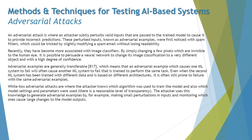These perturbed inputs, known as adversarial examples, were first noticed with spam filters, which could be tricked by slightly modifying a spam email without losing readability. More recently, they have become associated with image classifiers — by simply changing a few pixels invisible to the human eye, it is possible to persuade a neural network to change its image classification.